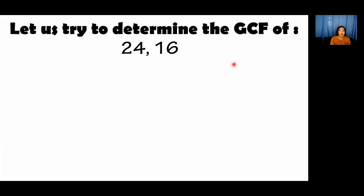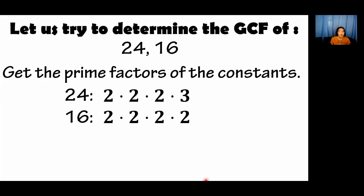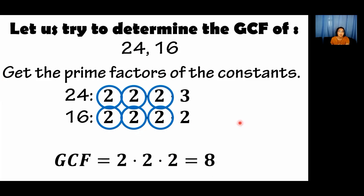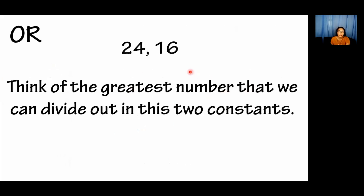Another example is 24 and 16. The first way is to get the prime factors: 24 = 2 × 2 × 2 × 3, and 16 = 2 × 2 × 2 × 2. What's common sa kanila? Meron tayong tatlong 2 na common on 24 and 16, kaya ang GCF nila is 2 × 2 × 2 = 8. Another way is to think of the greatest number that we can divide out in both constants, and again it's 8.